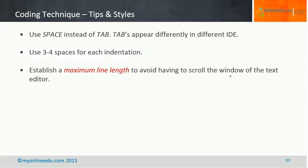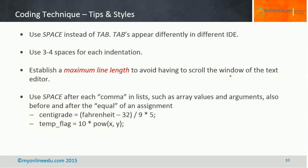The next point: establish a maximum line length to avoid having to scroll the window of the text editor. When writing code, we tend to let very long lines scroll to the right side of the editor. It is better to establish a maximum line length so that once it is reached, you break that line and bring the next portion of code to the next line, making it much more readable.